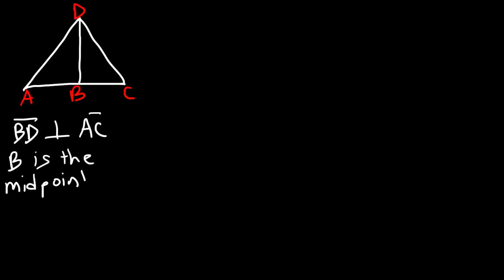Now let's work on another example. Let's say this is A, B, C, and D. You're given that BD is perpendicular to AC, and also B is the midpoint of AC.